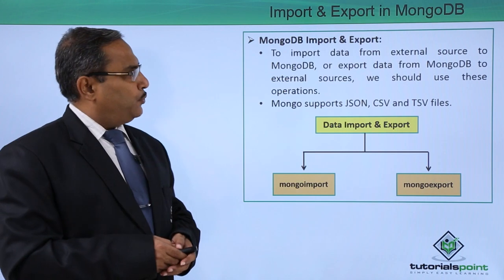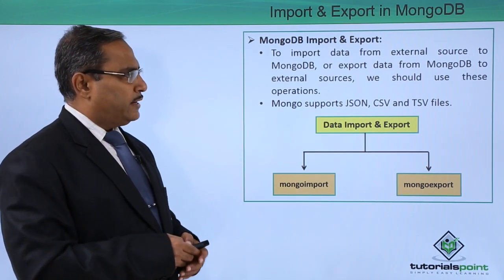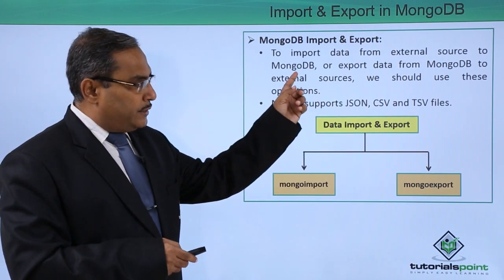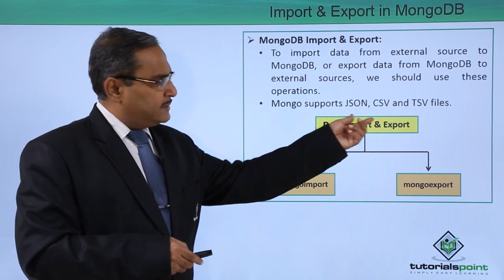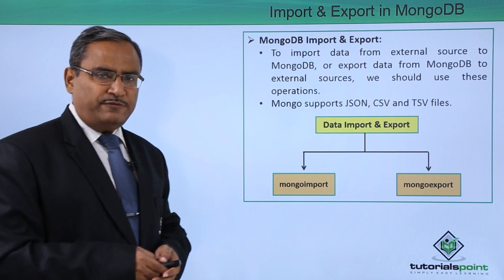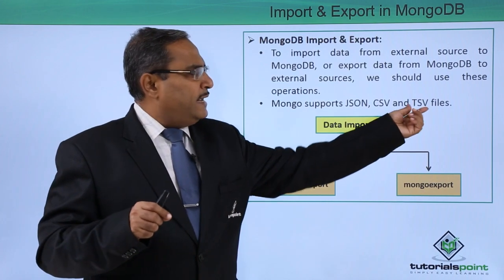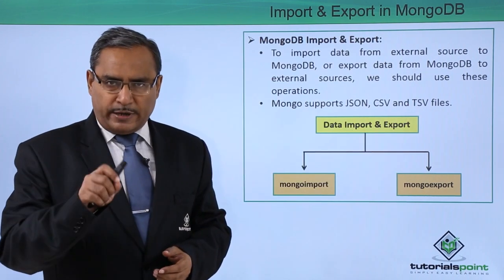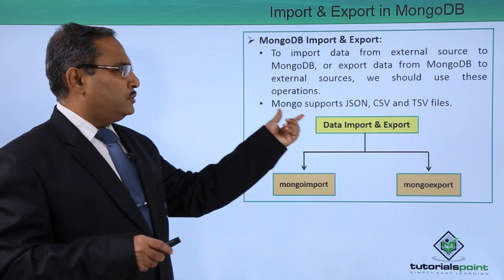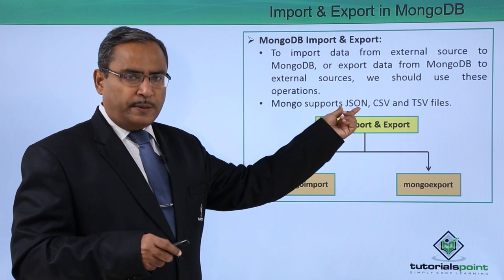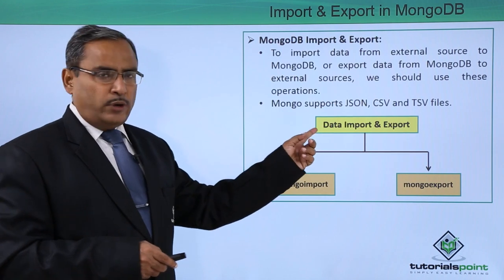MongoDB import and export: to import data from an external source to MongoDB, or export data from MongoDB to external sources, we use these operations. MongoDB supports JSON, CSV, and TSV files. CSV means comma separated values, where the values will be separated by commas, and TSV means tab separated values. JSON is JavaScript Object Notation.